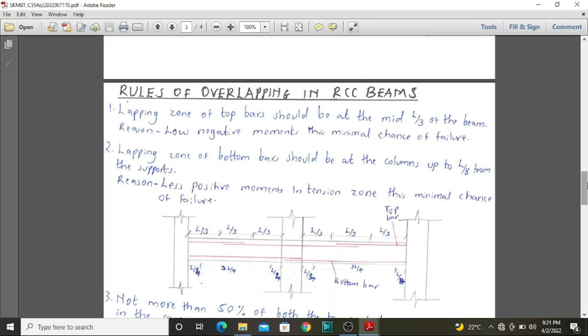The first rule is that the lapping zone of the top bars should always be at the L over 3 midsection of our beam. So if we divide our beam into three parts on the top section, lapping should always be at the midregion. Since this region has low negative moments.